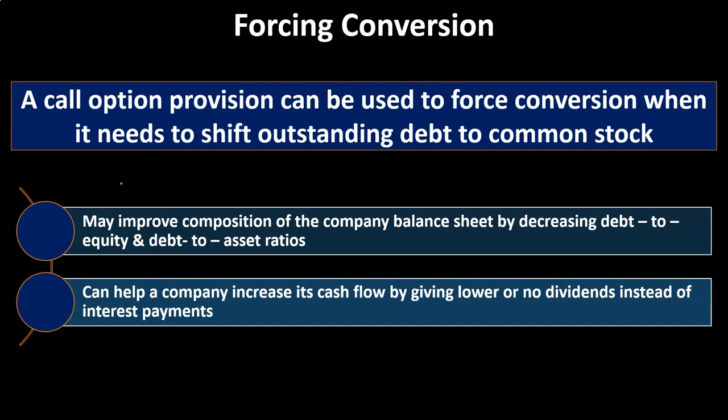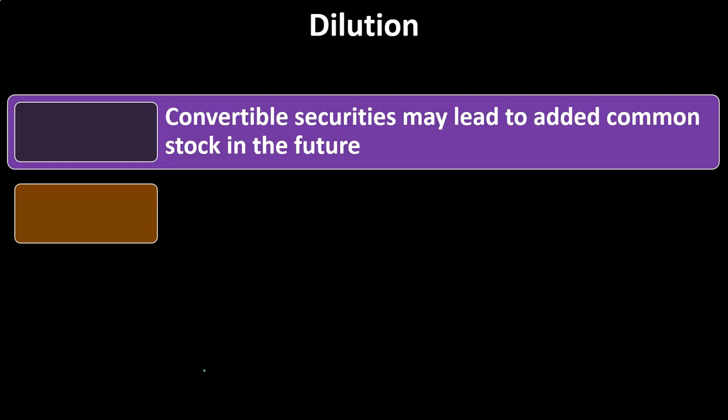Forcing conversion can help a company increase its cash flow by giving lower or no dividends instead of interest payments. If you have bonds outstanding, you're obligated to make interest payments. But if you get bondholders to convert to stocks, you have more control over cash flows because you're no longer required to pay interest. You then have the option as the company to decide whether or not to pay out dividends. Dividends are not required to be given out, giving you more control, whereas interest with debt financing is obligated by the terms of the bond.